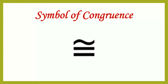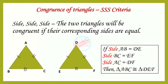This is the symbol of congruence. Congruence of triangles — SSS criteria: Side, Side, Side. The two triangles will be congruent if their corresponding sides are equal. Here we can see that side AB is equal to DE, side BC is equal to EF, and side AC is equal to DF. Therefore, triangle ABC and triangle DEF are congruent.